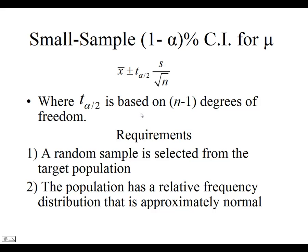And again, t of alpha over 2 is based on n minus 1 degrees of freedom. So, the right side of this problem, the right side of the formula, is the error, and our point estimator is on the left.